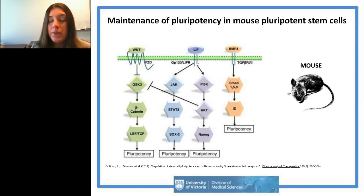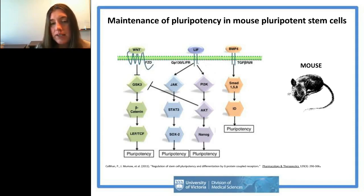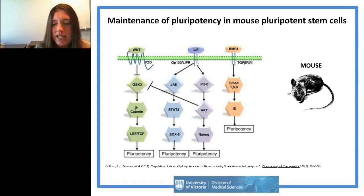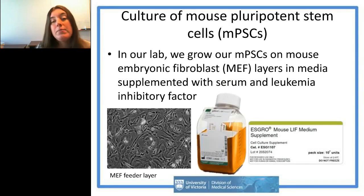To briefly review how mouse pluripotent stem cells are maintained: the pathways include WNT signaling, which is important in both mouse and human cells, but for mouse cells two major pathways involve leukemia inhibitory factor (LIF) and bone morphogenetic protein 4 (BMP4). These two pathways really help activate SOX2 and NANOG to keep these regulatory circuits up and maintain pluripotency. I mention this to contrast with human cells, which have much stricter requirements.